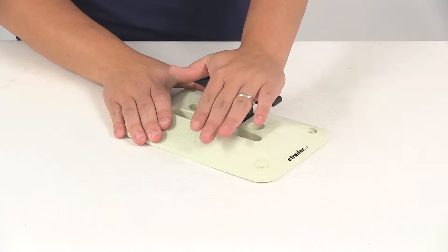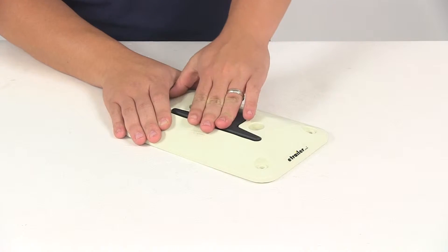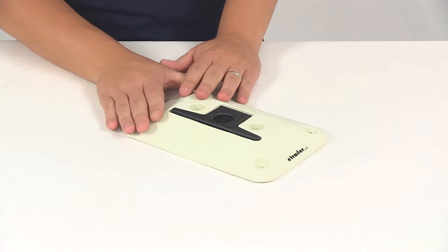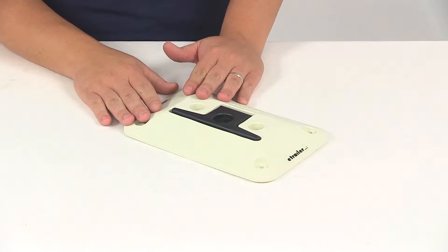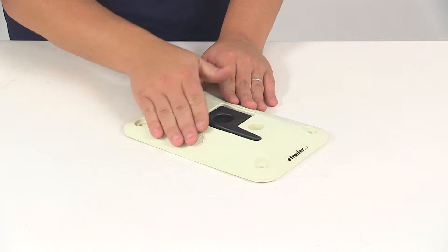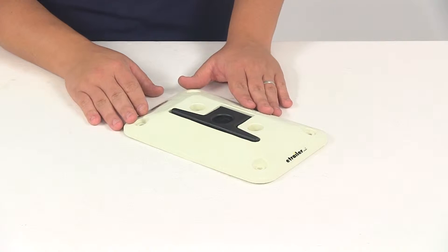The cleat is retractable simply by pushing it down. So when it's not in use it lays almost flush with the base. It's going to help prevent tripping or injury, and the sides of the base have a nice angled design to prevent stubbing your toes or tripping.